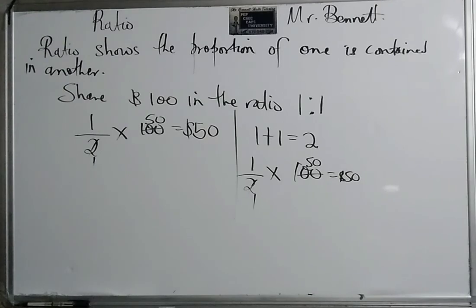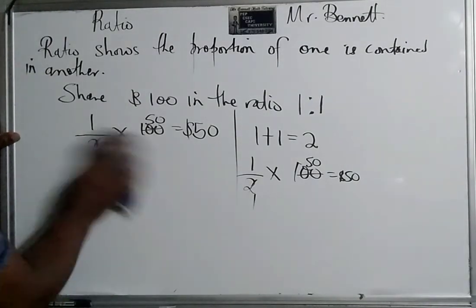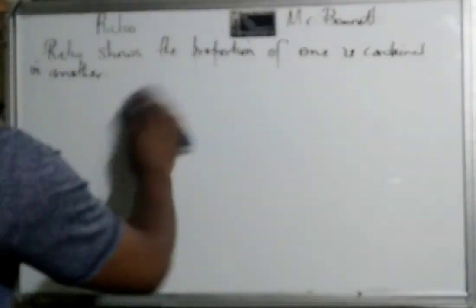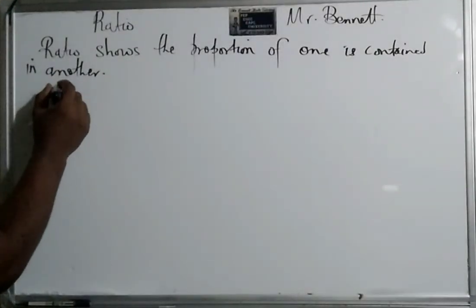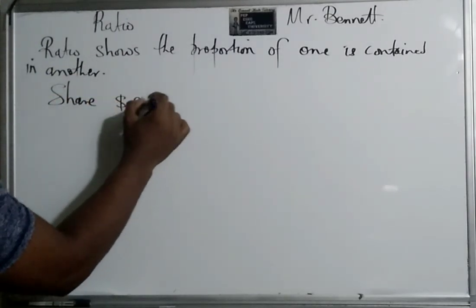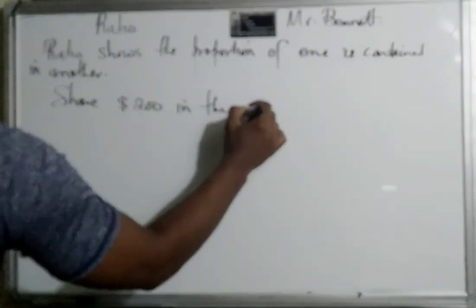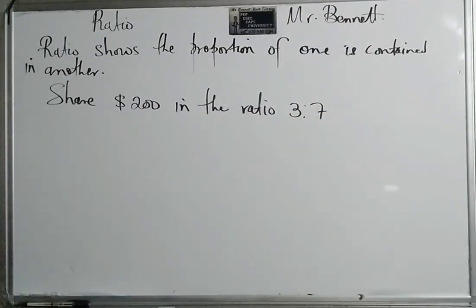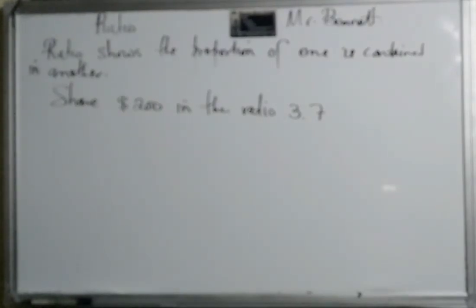All right, so let us look at a little bit more complicated ones. To be honest, it doesn't get really hard, but nevertheless we have to do this. It's necessary, it's coming even in multiple choice. It can be in words also, so you have to be mindful of these things. So let us look at this now. Let us say share two hundred dollars in the ratio 3 to 7.